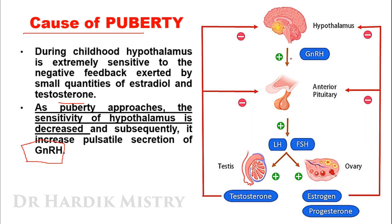The hypothalamus releases GnRH (gonadotropin releasing hormone), which stimulates the anterior pituitary to release LH and FSH. Under the effect of LH, the testes release testosterone, and under the effect of FSH, the ovary releases estrogen and progesterone. All three hormones — testosterone, estrogen, and progesterone — give negative feedback to the anterior pituitary gland as well as to the hypothalamus.